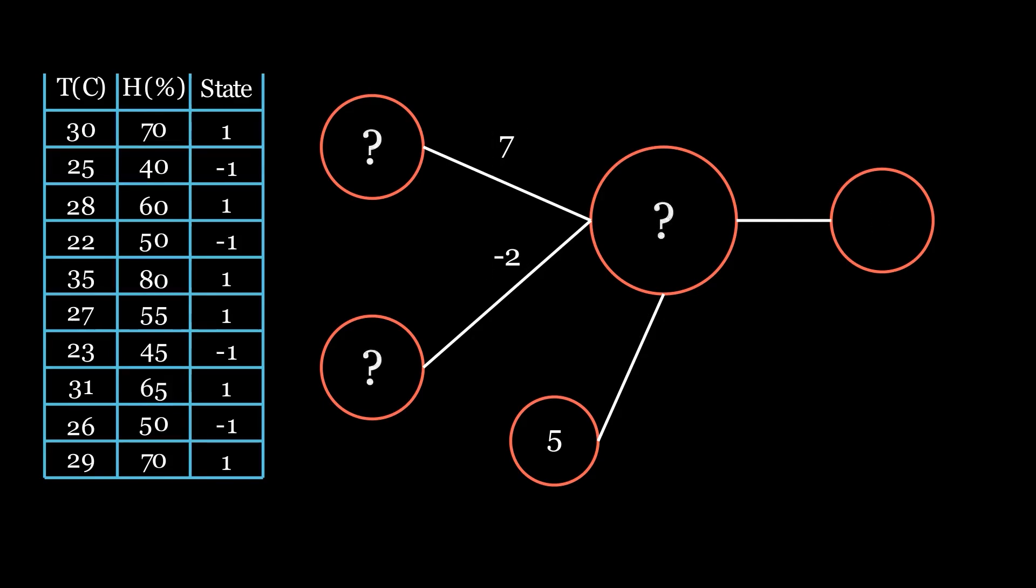But what math operations will we be using? Let me pass the first row to our model to show you. Each input value is multiplied by the weight corresponding to it. Then we add these two values, and we also add our bias on top of that. After that, we pass our final value through our activation function. And that's pretty much everything.